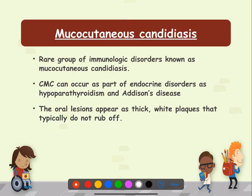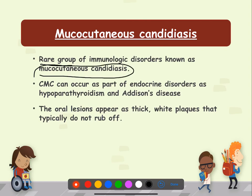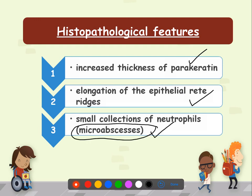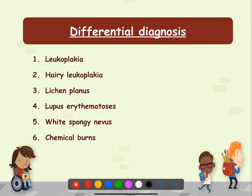Mucocutaneous candidiasis is a rare immunological disorder with complete mucocutaneous involvement, often associated with endocrine disorders. White plaques do not rub off. Histopathologically, there is increased thickness of parakeratin, elongation of epithelial rete ridges, and small collections of neutrophils called micro-abscesses. Differential diagnosis includes other white lesions such as leukoplakia, hairy leukoplakia, lichen planus, lupus erythematosus, white sponge nevus, and chemical burns.